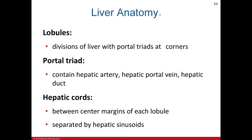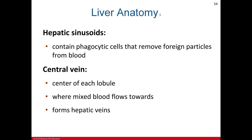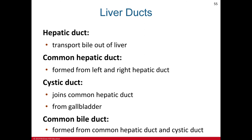The lobules of the liver are divided with a portal triad at each corner, containing the hepatic artery, the hepatic portal vein, and the hepatic duct. Hepatic cords, formed by plate-like groups of liver cells called hepatocytes, are located between the center and margin of each lobule and separated by hepatic sinusoids. The hepatic sinusoids contain phagocytic cells that remove foreign particles from the blood. A central vein found in the center of each lobule collects mixed blood and forms the hepatic vein.